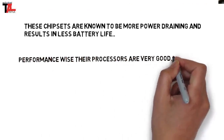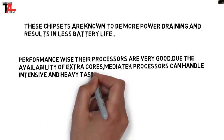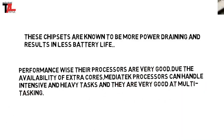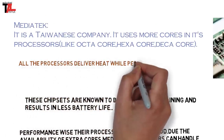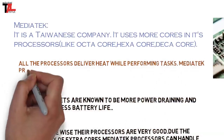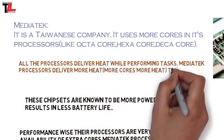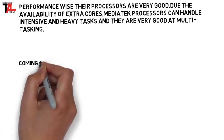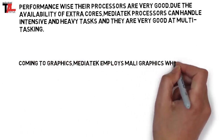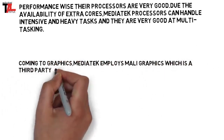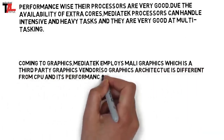Performance-wise, their processors are very good due to the availability of extra cores. MediaTek processors can handle intensive and heavy tasks and are very good at multitasking, but we can see all this practically if we have sufficient RAM — more cores demand more RAM to give the best performance. Regarding heating, MediaTek processors deliver more heat compared to others. For graphics, MediaTek employs Mali graphics, which is a third-party graphics vendor.